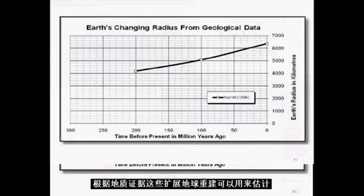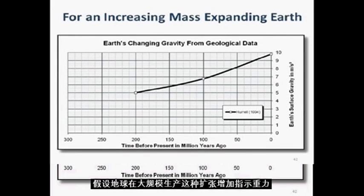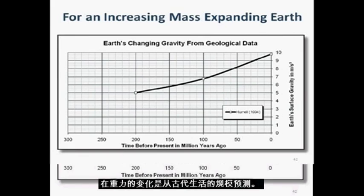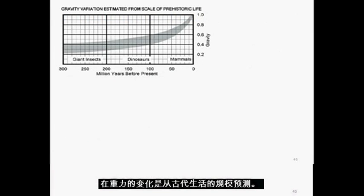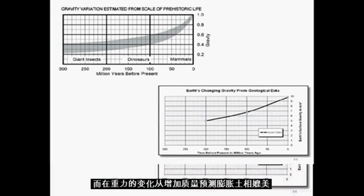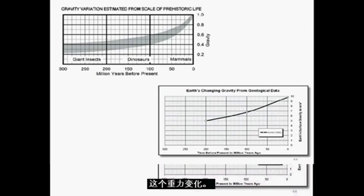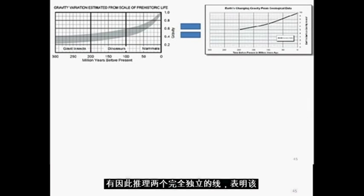These expanding Earth reconstructions based on geological evidence can be used to estimate the size of the Earth in the past. Assuming that the Earth has increased in mass to reduce the expansion indicates that gravity has increased over time — this is an increasing mass expanding Earth. The variation in gravity predicted from the scale of ancient life, and the variation in gravity predicted from an increasing mass expanding Earth, are comparable. There are, therefore, two completely independent lines of reasoning which indicate that the Earth has expanded in size and mass to increase its gravity.